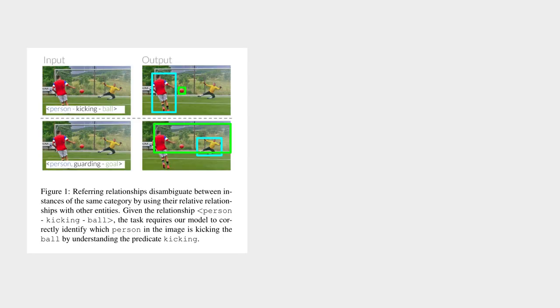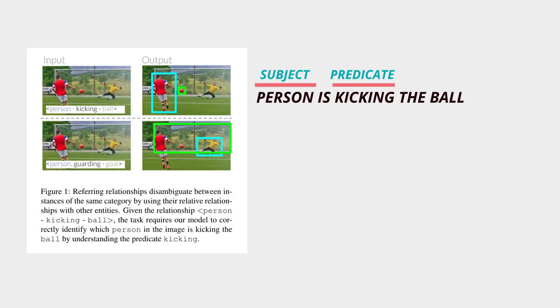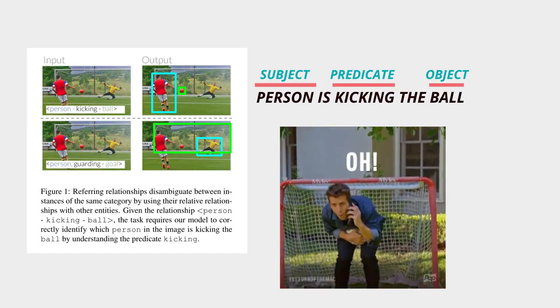In this paper the example is person is kicking the ball. Now here the person is the subject, kicking is the predicate and the ball is the object. FYI double meaning is intentional here.